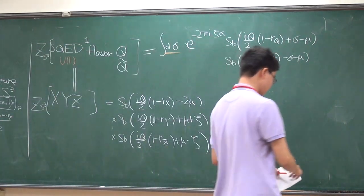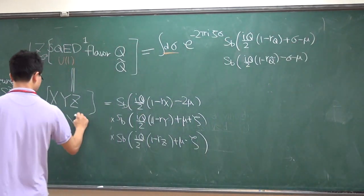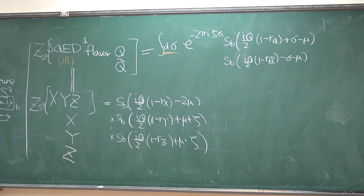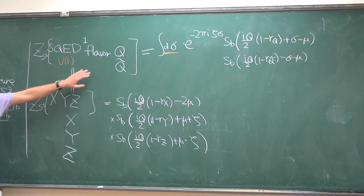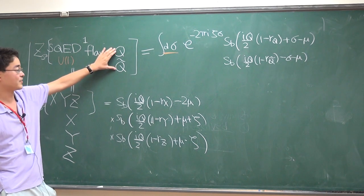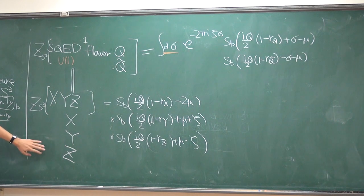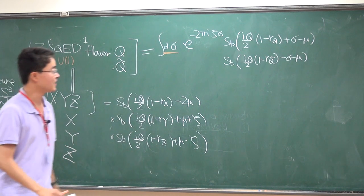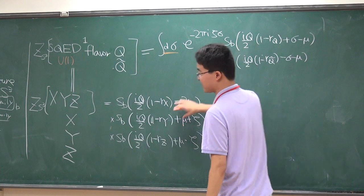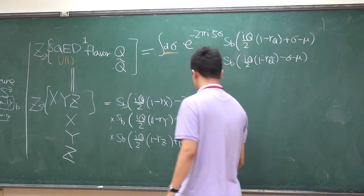Now, what about the other thing? What about the matter? That's about the vector multiplet. What about the chiral multiplet? So there are five chiral multiplets. Here we have Q and Q-tilde, and here we have X, Y, Z. And corresponding to that, there is some factor of two and three factors of S_b, where S_b is some special function.